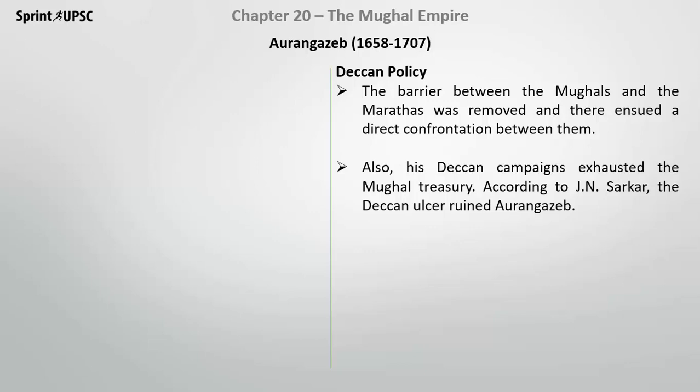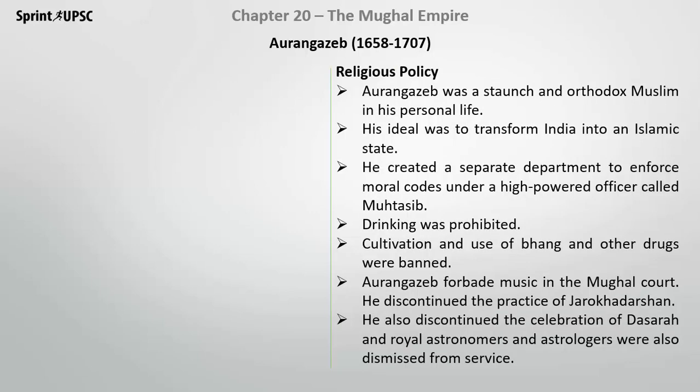His Deccan campaigns exhausted the Mughal treasury, and according to J.N. Sarkar, the Deccan policy ruined Aurangzeb. That was the key reason for his defeat.